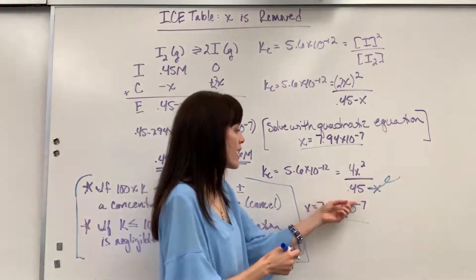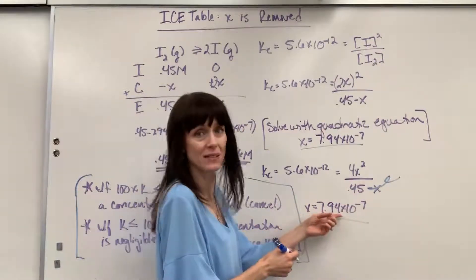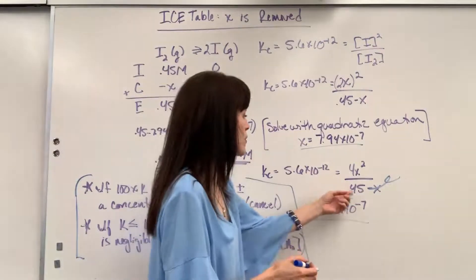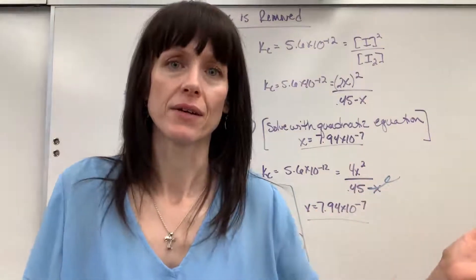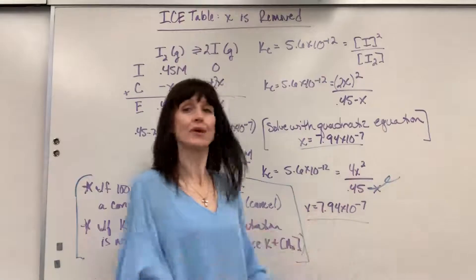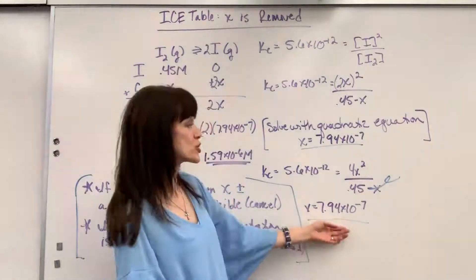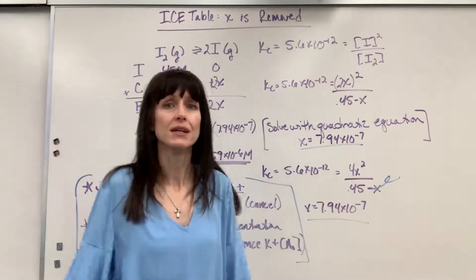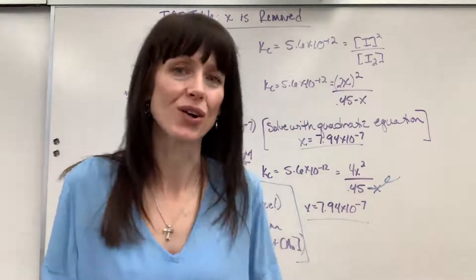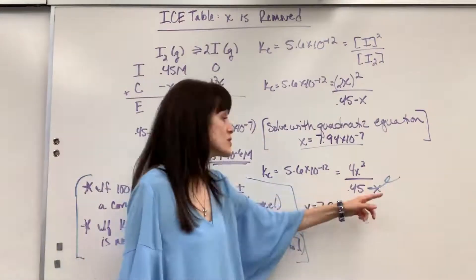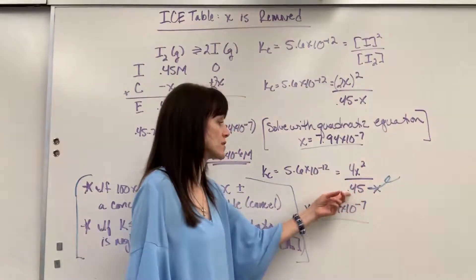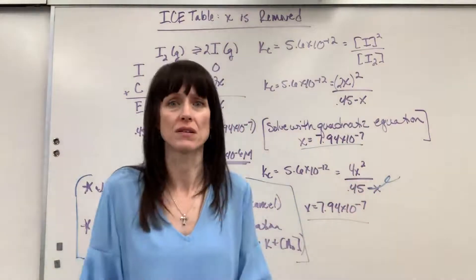0.45 minus 7.94 times 10 to the minus 7 is 0.44999999999. That rounds to 0.45. This is so small that when you subtract it, it's as if it doesn't even change the concentration. That's why x is negligible. It's so small in comparison to that concentration. It doesn't change that concentration.